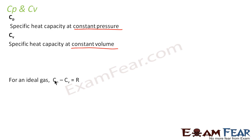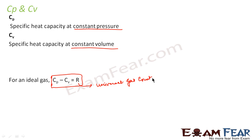For an ideal gas the relation between Cp and Cv is as follows: Cp minus Cv is equal to R, where R is the universal gas constant. I have talked about all these things in detail in previous chapters where I have discussed and derived these equations. So if you want a thorough understanding, you can go through those lessons — you can refer to thermal properties of matter.